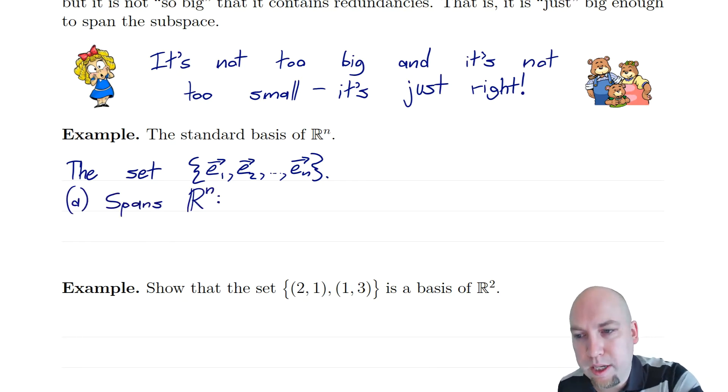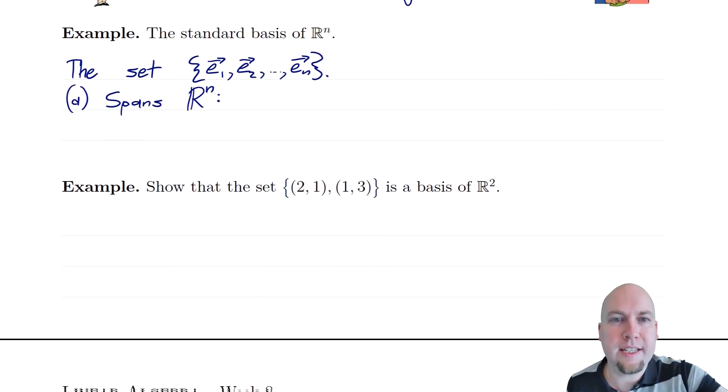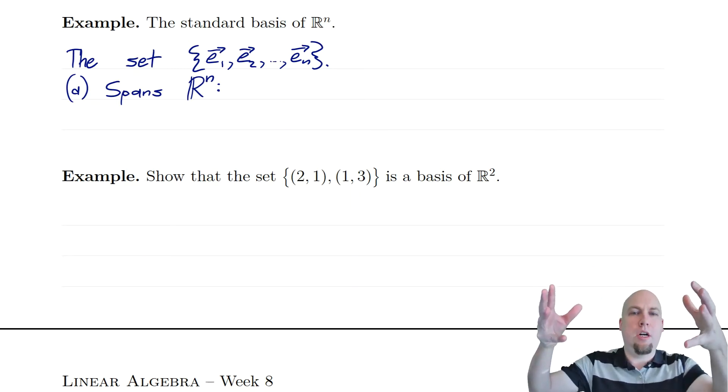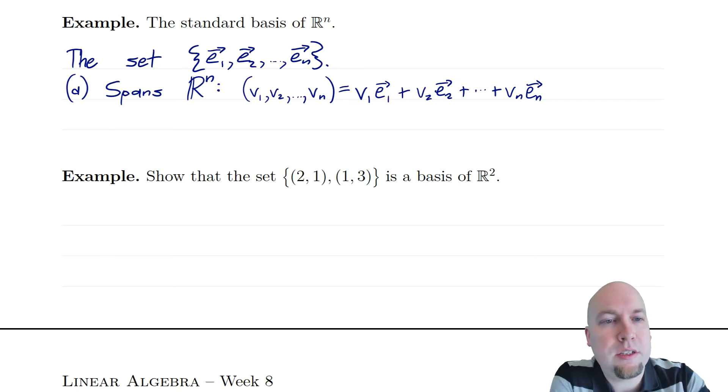To show that this actually is a basis, we've got to show two things. We go back up to this definition, and we've got to show that property A holds, we've got to show that it spans all of R^n, and property B holds, we've got to show that it's linearly independent. Fortunately, for the standard basis, both of these properties are fairly straightforward to show. So property A, to show that it spans all of R^n, we've just got to show that everything in R^n can be written as a linear combination of these standard basis vectors. And this is something that we learned how to do way back in week one.